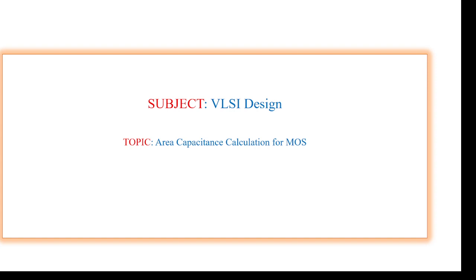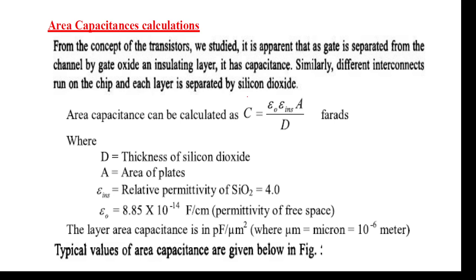I am going to explain the area capacitance calculations for MOS (metal oxide semiconductor) transistors. Capacitance is defined as epsilon-naught multiplied with epsilon of the insulating material, multiplied with the area of the plates, divided by the thickness of the oxide. Here epsilon-naught is the free space permittivity, epsilon-ins is the silicon dioxide permittivity, A is the area of the plates, and tₒₓ is the oxide thickness. Substituting these values gives the standard capacitance values.